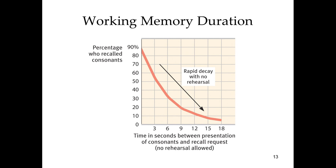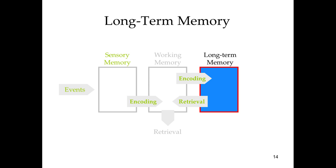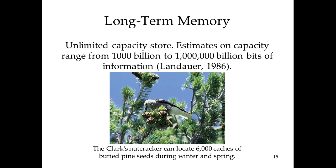We've looked at sensory memory and working memory — remember, working memory is like your desktop. Now long-term memory is where it gets really interesting. Long-term memory is essentially your hard drive, but it's not a 500 gigabyte or terabyte hard drive — it can hold unlimited amounts. The brain is capable of holding unlimited information, or at least more than we're capable of using. Estimates range from between 100 billion to one million billion bits of information. This is not specific to humans — many species have this same range of long-term memory capability. In fact, many birds are capable of locating food at 6,000 different locations from sheer memory.